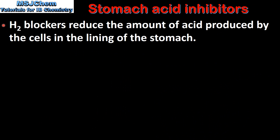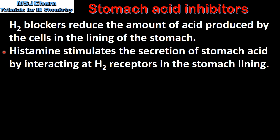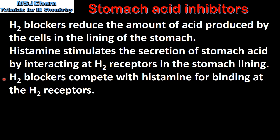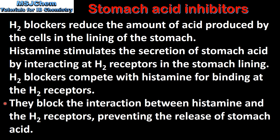Next we look at H2 blockers. H2 blockers reduce the amount of acid produced by the cells in the lining of the stomach. Histamine stimulates the secretion of stomach acid by interacting at H2 receptors in the stomach lining. H2 blockers compete with histamine for binding at the H2 receptors, blocking the interaction between histamine and the H2 receptors and preventing the release of stomach acid.